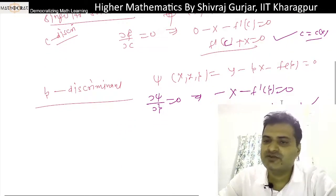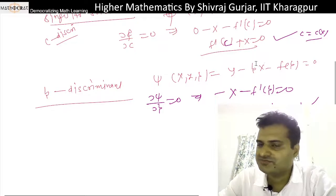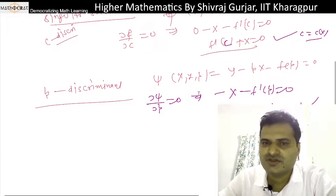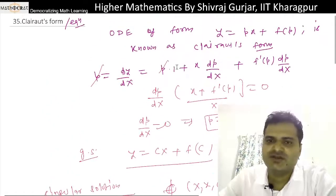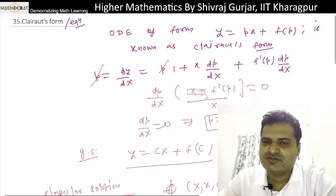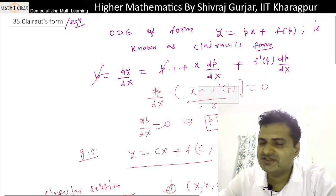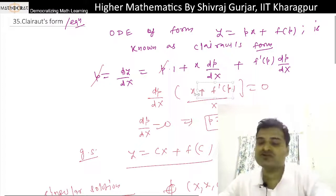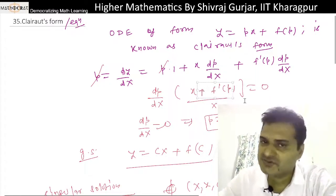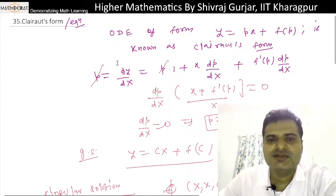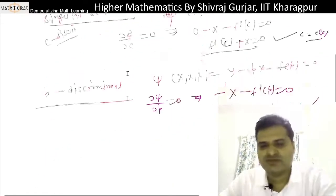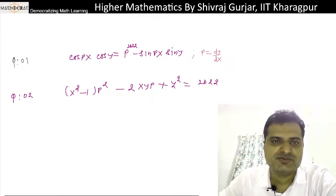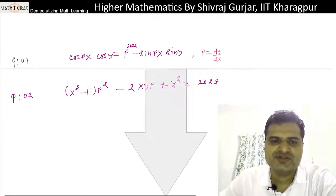This will be the process. We eliminate p to get terms in x and y only. This will give us the singular solution. Now let's try this problem with very easy questions.